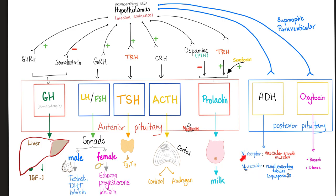There is also V1 and V3. When ADH acts on the V1 receptor, it causes vasoconstriction by contracting smooth muscles in blood vessels, which will raise your blood pressure. When ADH acts on V2, it will reabsorb pure water from the kidney, which will also raise your blood pressure. ADH has one purpose in life: to raise your blood pressure.